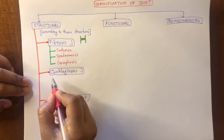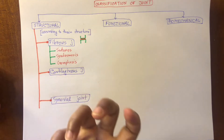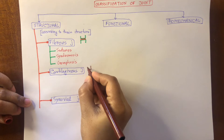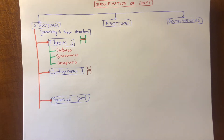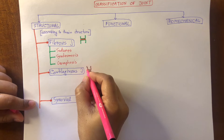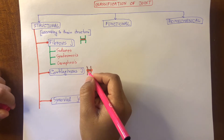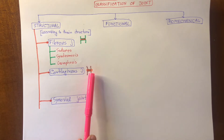Now let's see the cartilaginous joint. A cartilaginous joint is where two bones are connected with cartilage. Suppose this is one bone and this is another bone — in between these two bones, fibrocartilage or hyaline cartilage is present, connecting each other.